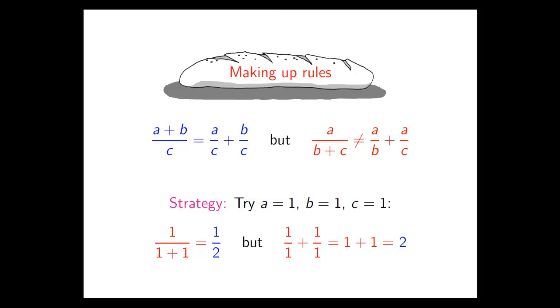Sometimes it might work, but it's got to work for all sensible choices of a, b and c. By sensible choices, I mean that b and c, for example, cannot be allowed to equal 0, because as we saw in the first screencast, division by 0 is not defined.